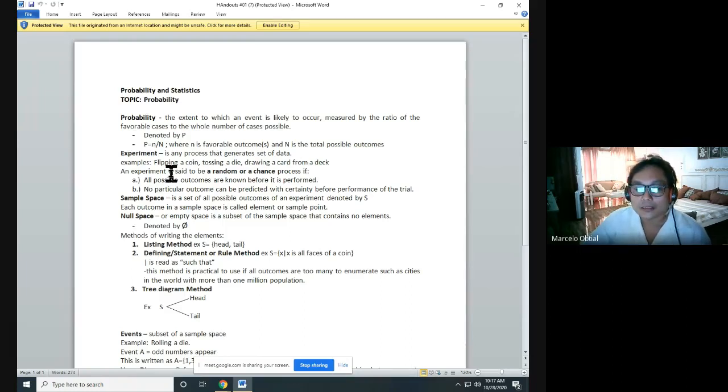Now, second term is experiment. Experiment is any process that generates a set of data. Some examples of experiment are flipping a coin, tossing a die, drawing a card from a deck. Now, an experiment is said to be a random or chance process if all possible outcomes are known before it is performed.